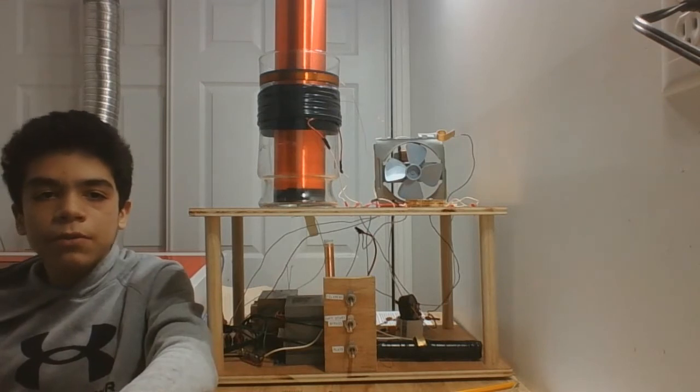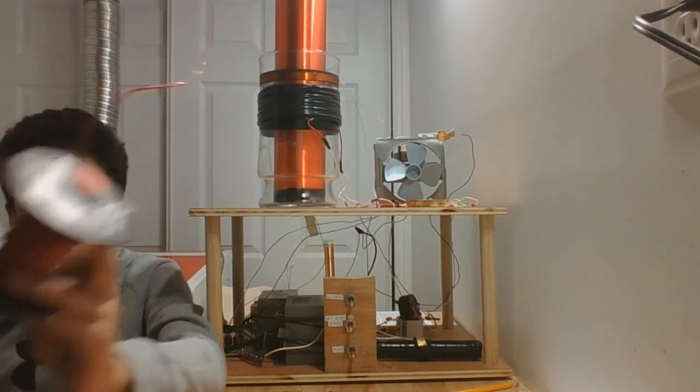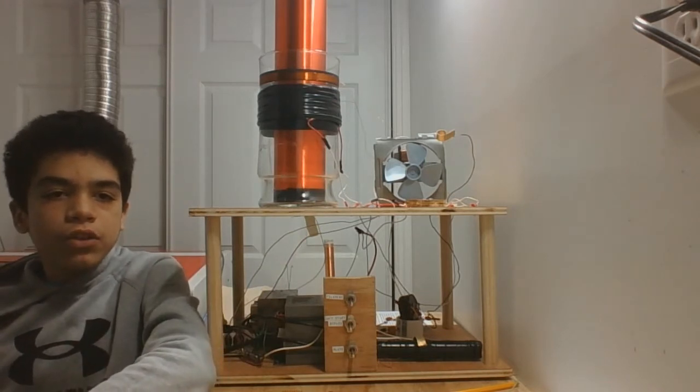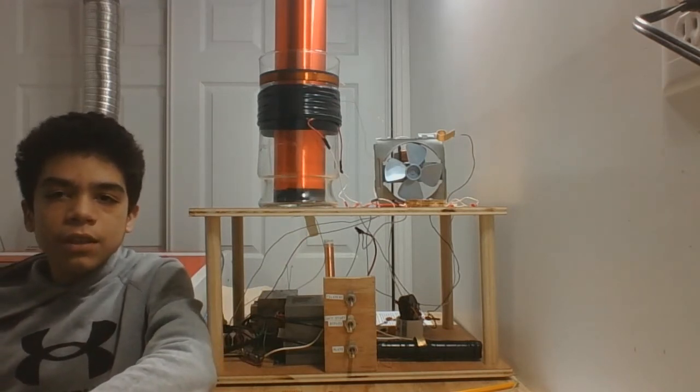Now to the coils themselves. To wind the primary coil I purchased a roll of 15 feet of 14 gauge copper wire and wound 20 turns around the flower pot. This coil serves as the primary inductor.